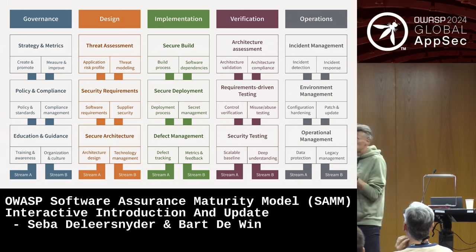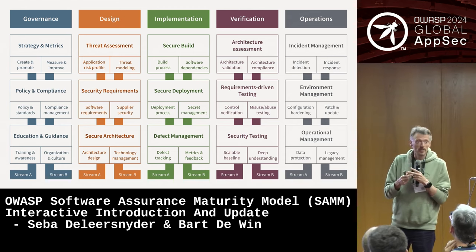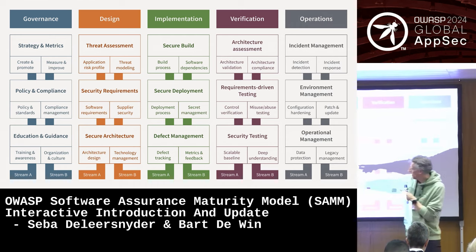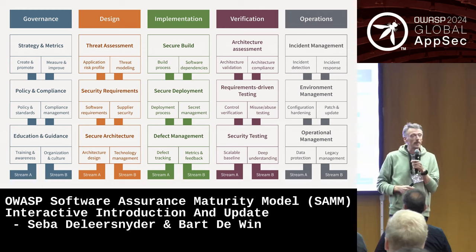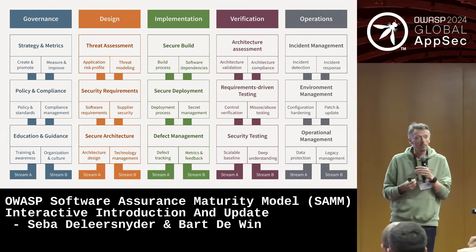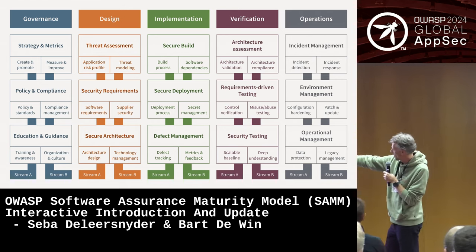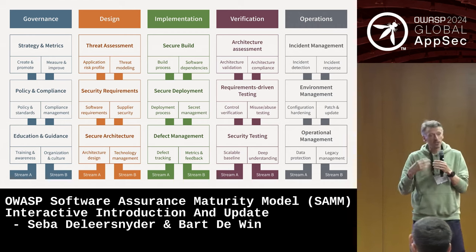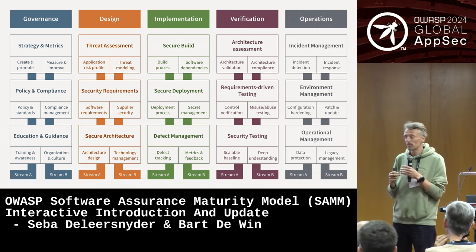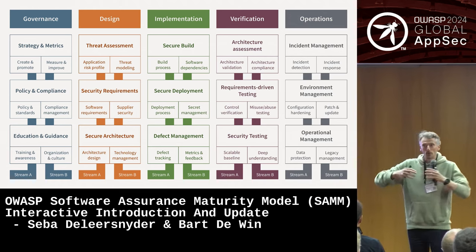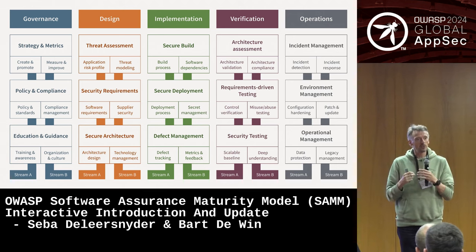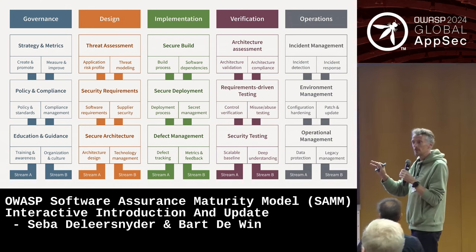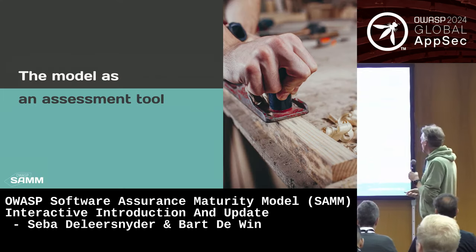SAMM is primarily about processes, but it also includes elements of people and technology. For instance, under Education and Guidance there are activities on training, awareness, organization, and culture — focused more on people. Technology is addressed in Security Architecture, specifically Technology Management, which focuses on whether the technology you're using to build the application is secure enough. But the focus of SAMM is really on the processes, the organization, and the capabilities you put in place rather than on the product itself.